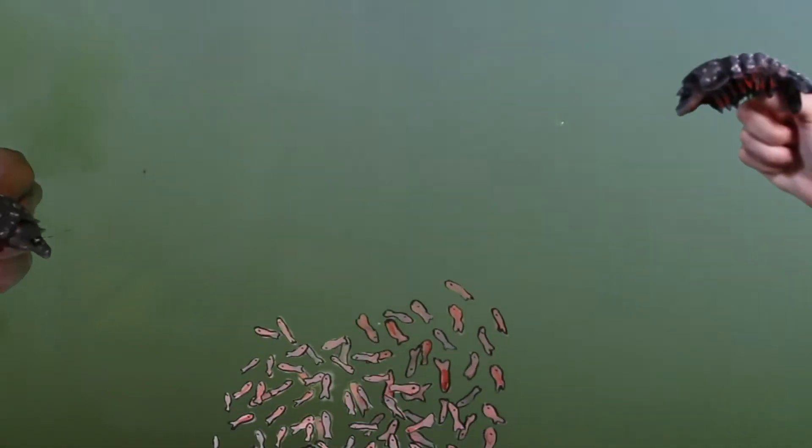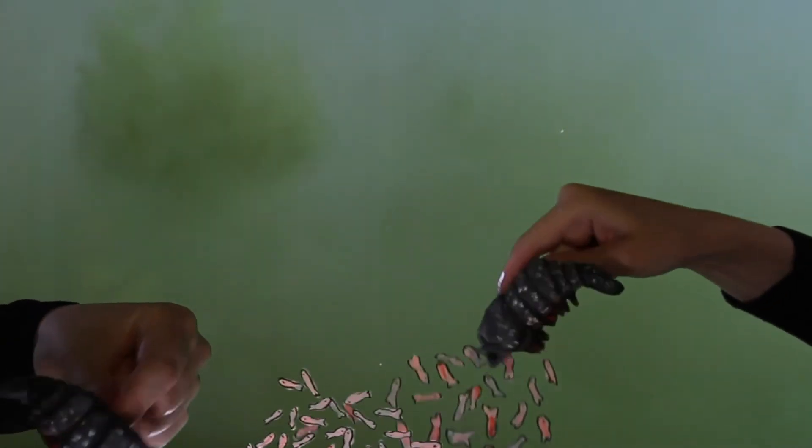The babies then float away in the current to grow into big strong fish, or get eaten by shrimp. Really, most of them will get eaten by shrimp.